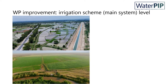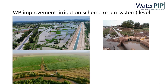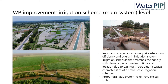At irrigation scheme or main system level, there are irrigation and drainage related management actions one could implement to improve water productivity. These actions relate to improving water conveyance and distribution efficiencies, including improving irrigation scheduling and the main canal network, so that the amount and timing of irrigation supply matches irrigation demand, which varies across space and time due to multi-cropping or different crop development stages. Another measure is a proper drainage system to remove excess water and salt.